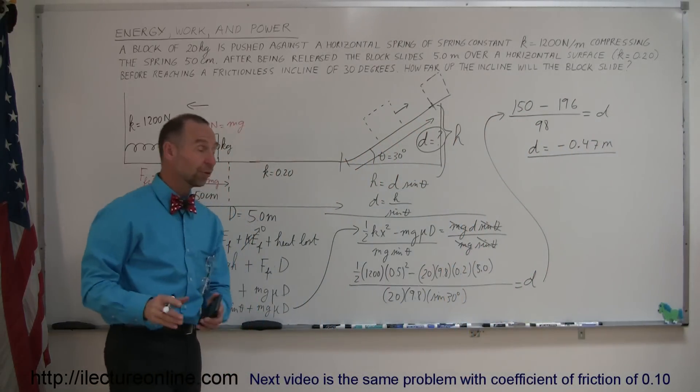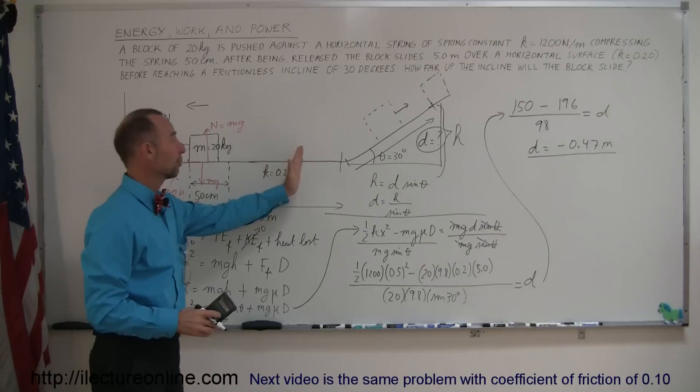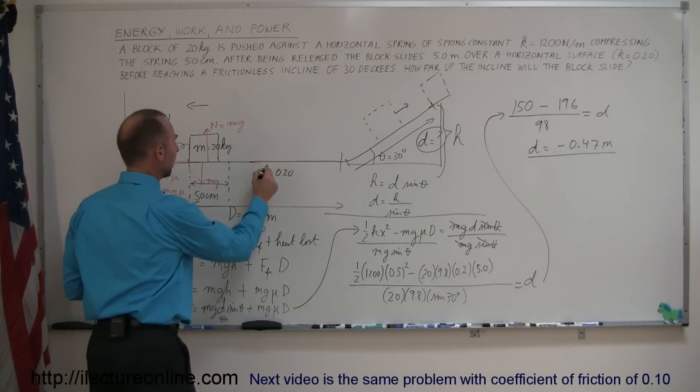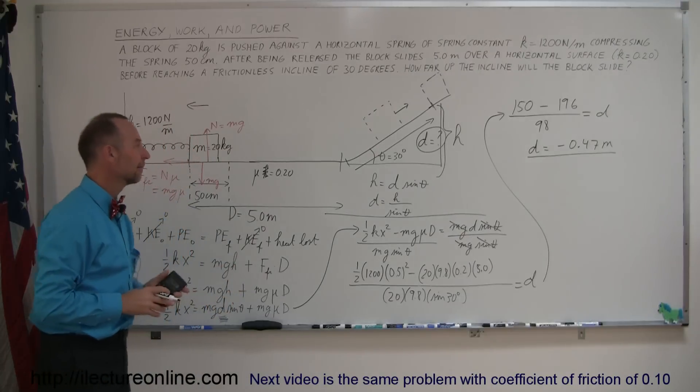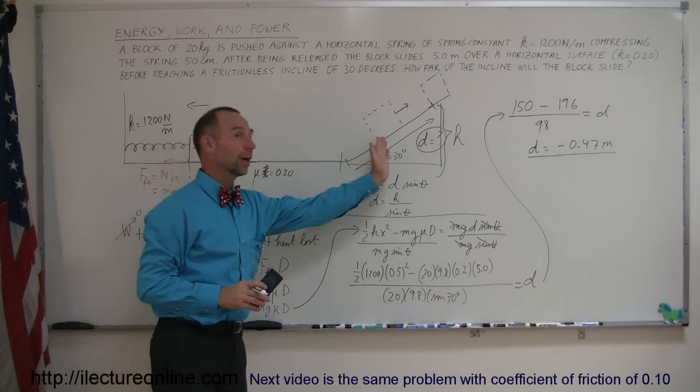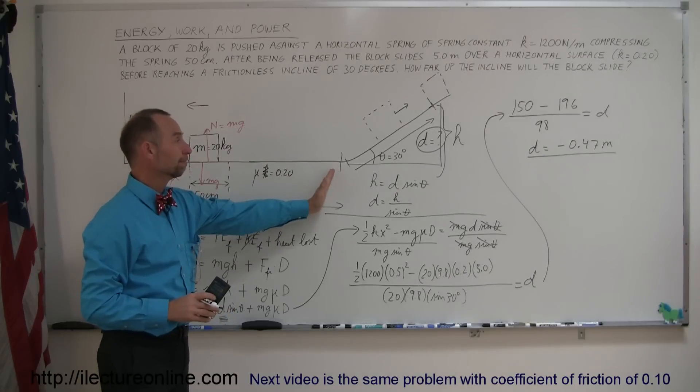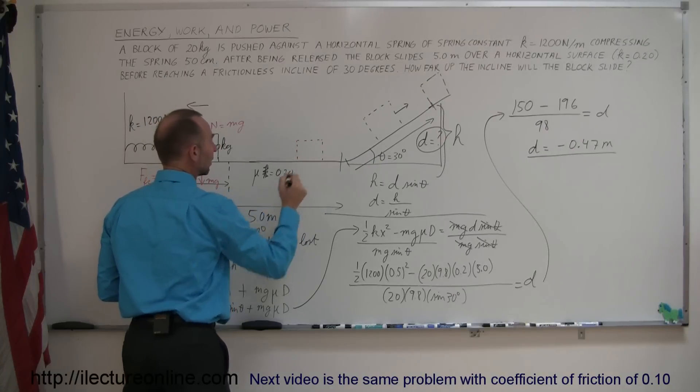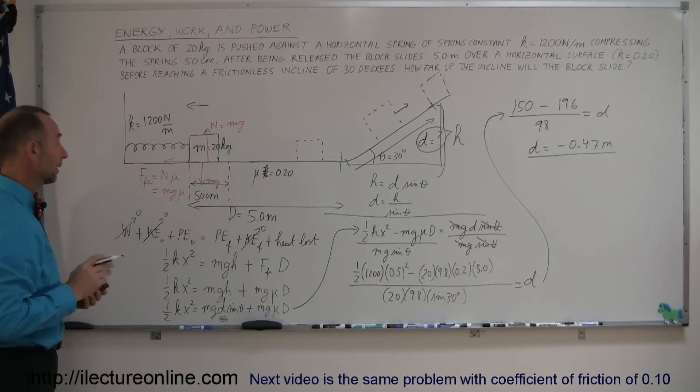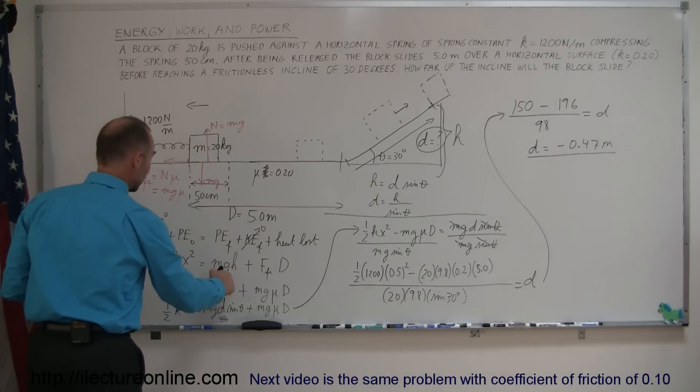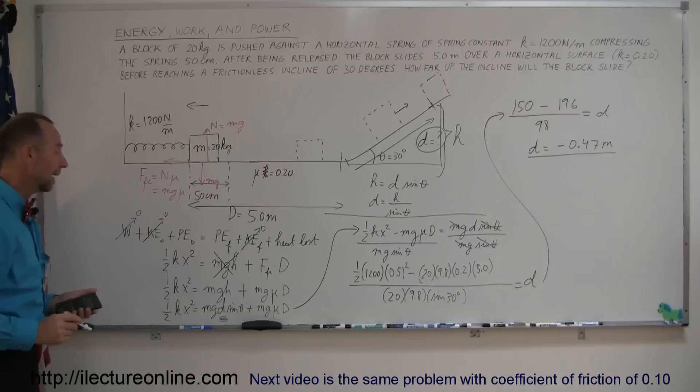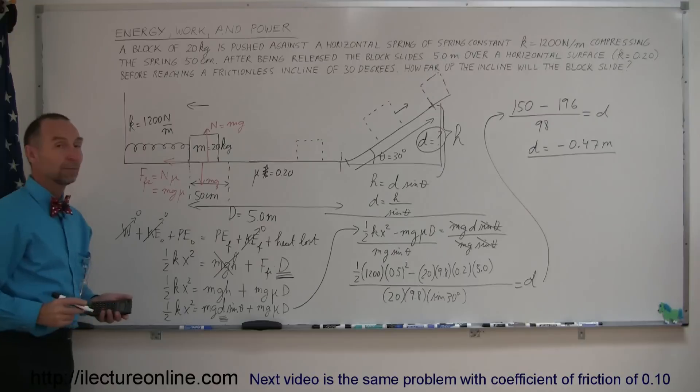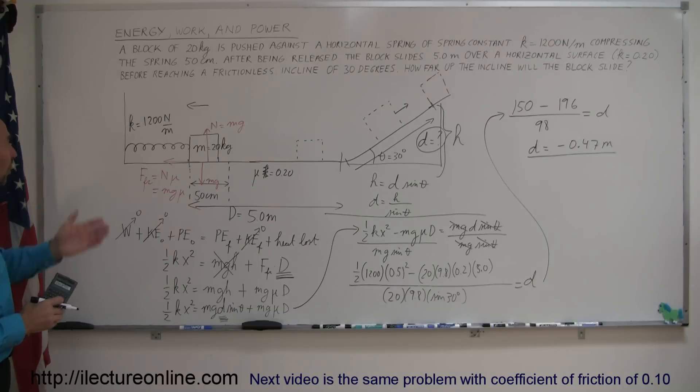So what does that mean? Well, my assumption was that the block will make it all the way across the rough surface, a distance of 5 meters with coefficient of friction. I shouldn't call it k. I should call it mu. Coefficient of friction is mu, not k. And then go up the incline a ways, but it looks like it never made it to the incline. It looks like since I have a negative answer that the block stops somewhere before it reaches the incline.